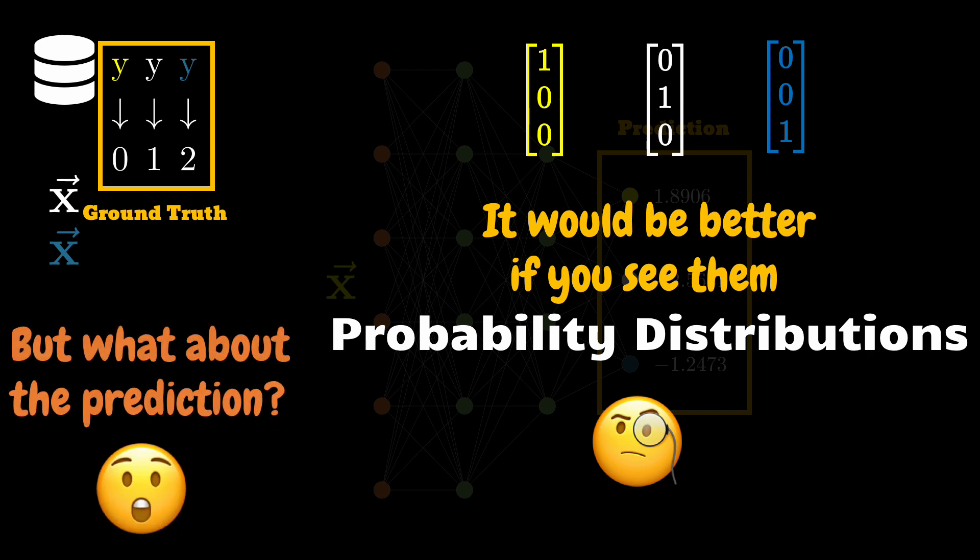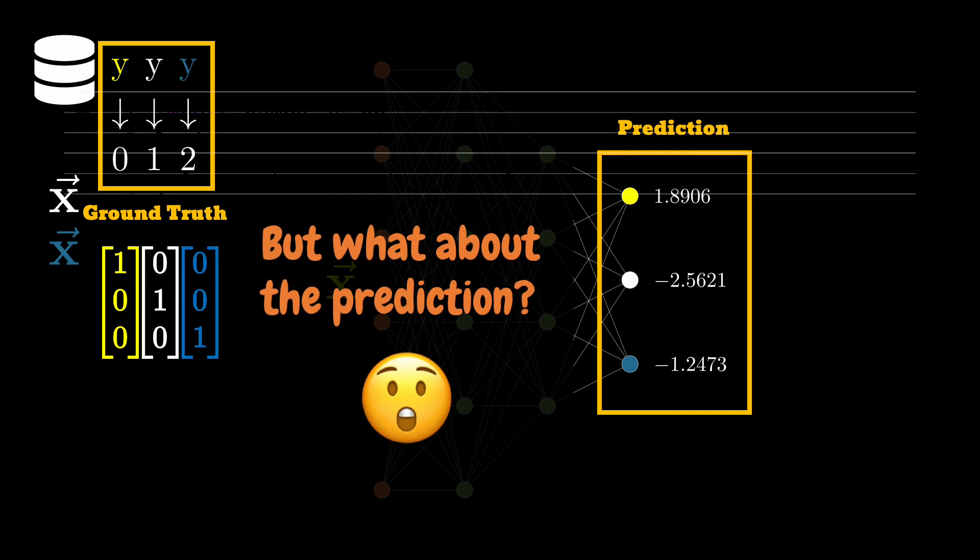But even though seeing our ground truth labels as the probability distribution was kind of easy, we need to do the same thing for our predictions as well, if you want to really compare apples to apples. Once we could see the prediction as the probability distribution, we would have given ourselves the possibility to use the tools from machine learning to compare them.